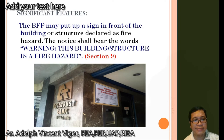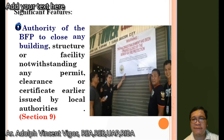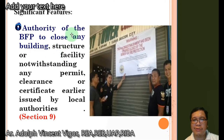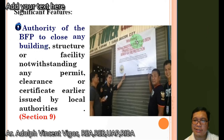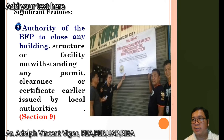Another significant feature is the authority of the BFP to close any building, structure, or facility, notwithstanding any permit, clearance, or certificate earlier issued by local authorities. This means the BFP can close a structure even if a building permit was already issued. A sign would be posted reading: 'Warning: this building or establishment has been ordered closed by the Bureau of Fire Protection.' This reinforces the BFP's powers to ensure the law is implemented.